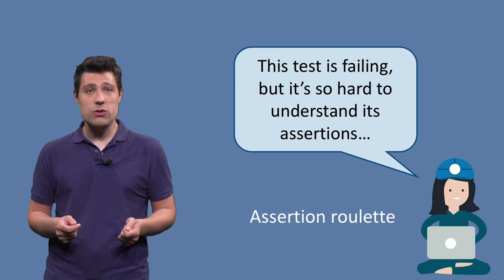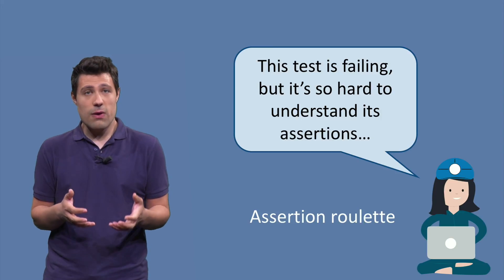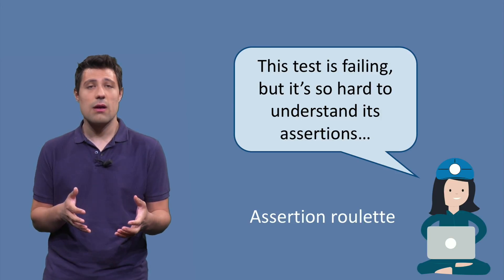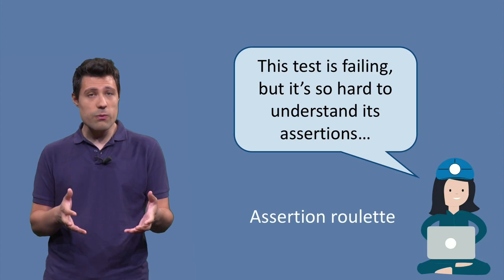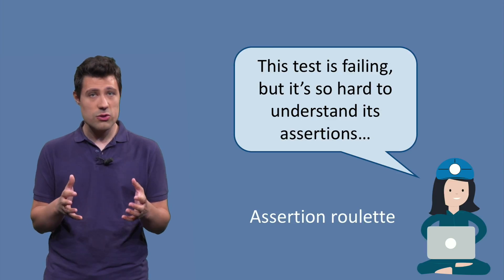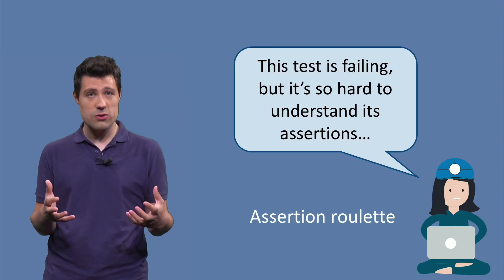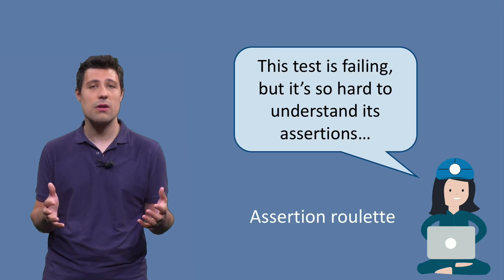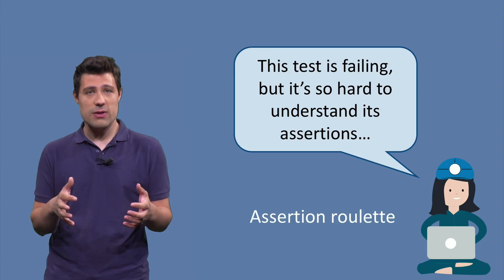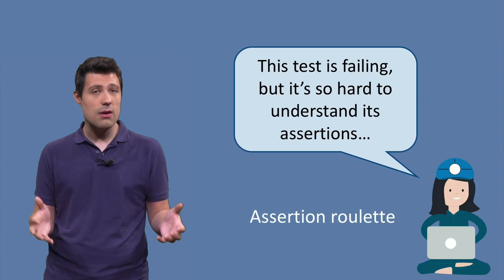Another very common test smell is called assertion roulette. This happens when you have a failing test and it is very hard for developers to understand which assertion is failing. This can happen for multiple reasons: you may have so many assertions in your test that as soon as one fails, it's hard to understand its context. Another situation is when an assertion is so complex that just by looking at it, you cannot grasp what it does.